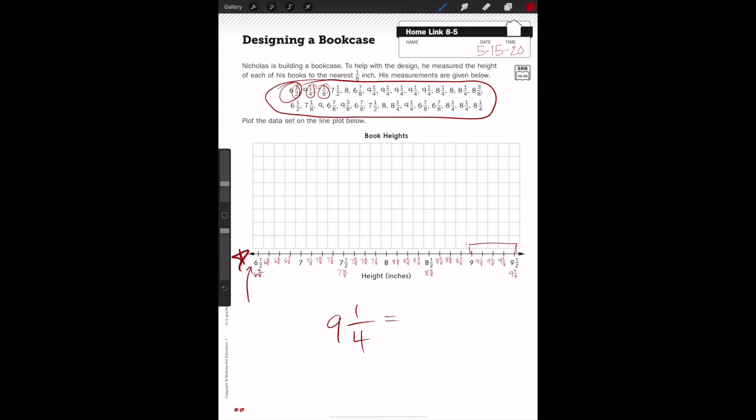Just working with the fraction part, I know that I need to put it in terms of eighths. So I need to find an equivalent fraction here. I asked myself, four times what equals, and I know the answer is two. Whatever I do to the denominator, I must do to the numerator. And one times two is two. Therefore, my equivalent fraction is nine and two-eighths. When I place nine and one-fourth on my number line, I'm actually going to be looking for nine and two-eighths, and I will place it right there.